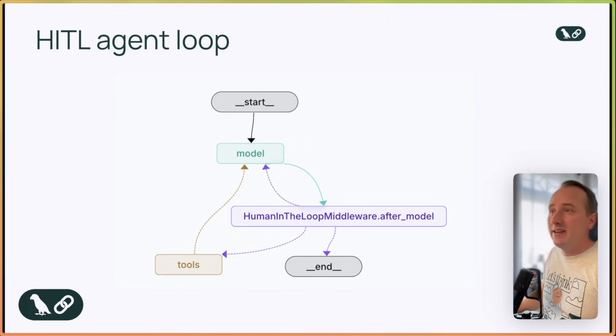For example, if it's about to send an email, post to an API, or make a system change, we might want a human to review that action before it runs. That's where a human-in-the-loop, or HITL, comes in.